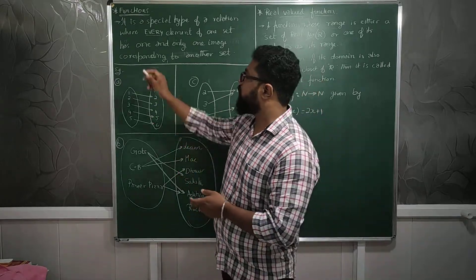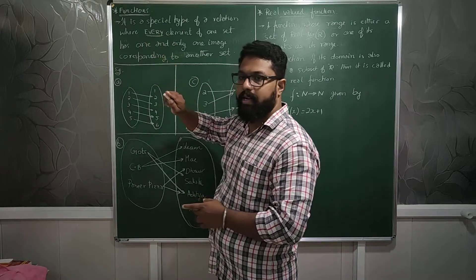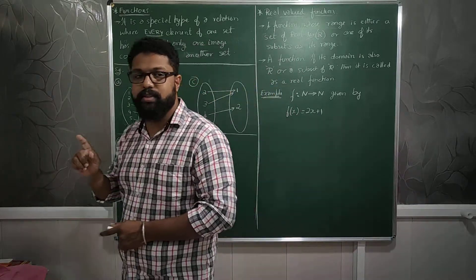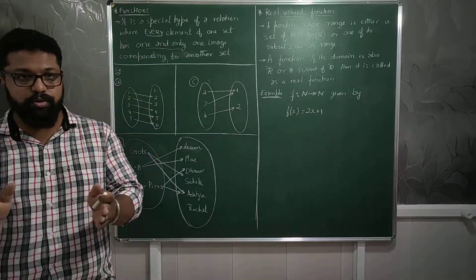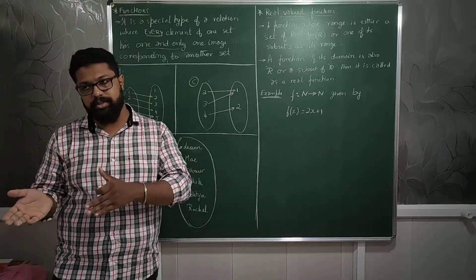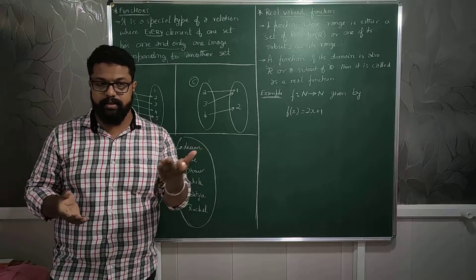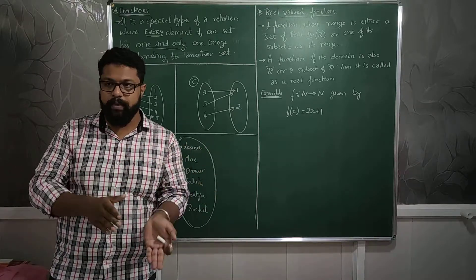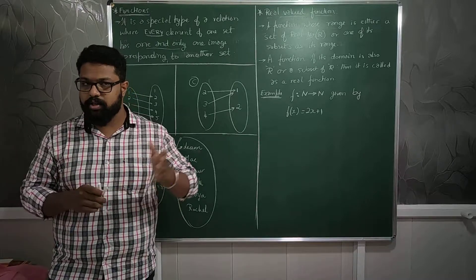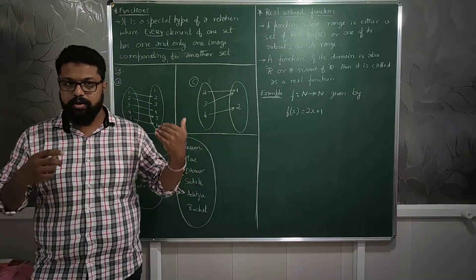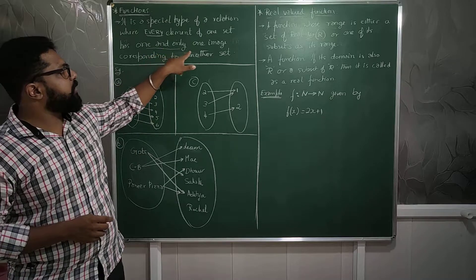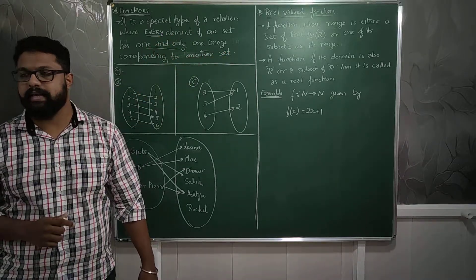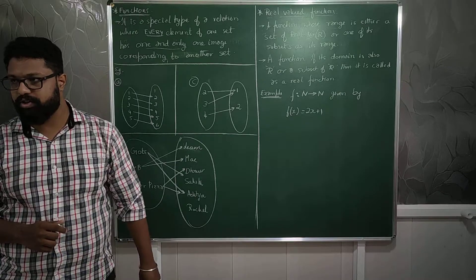Now, every element has one and only one relation with the second set. That is called a function. The words which I have underlined are important: every element, and one and only one image. That range, image, domain, and range you know from the previous topic. It should have only one and only one image, and every element should be interrelated to the second one. So that is how a function is formed.